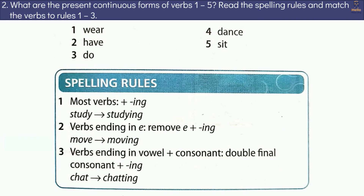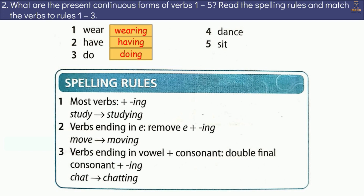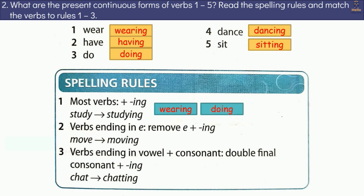Exercise 2: What are the present continuous forms of verbs 1 to 5? Read the spelling rules and match the verbs to rules 1 to 3. 1. Wear → Wearing. 2. Have → Having. 3. Do → Doing. 4. Dance → Dancing. 5. Sit → Sitting.